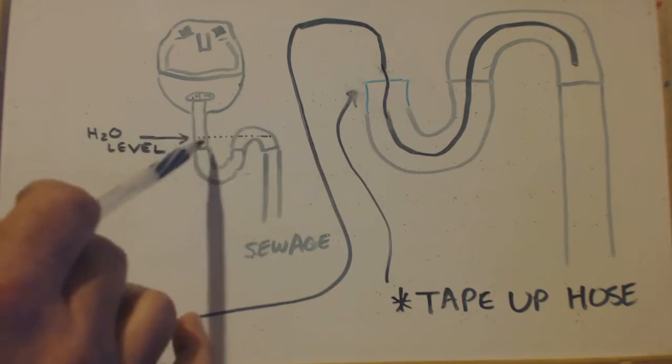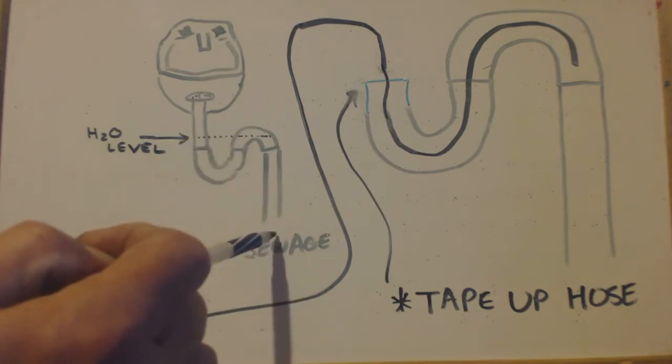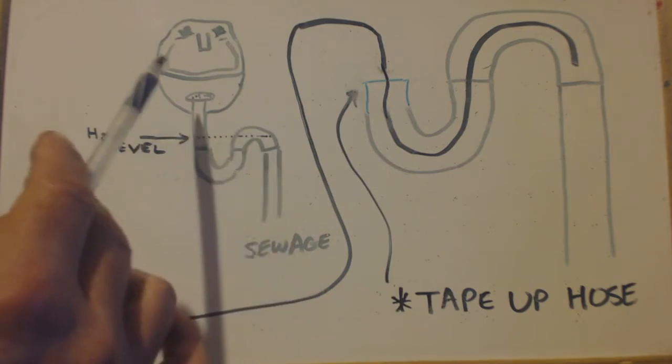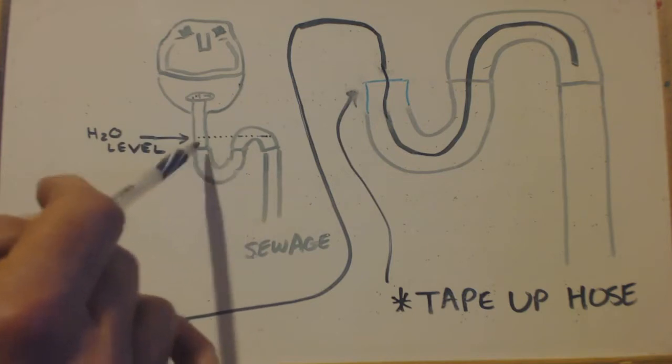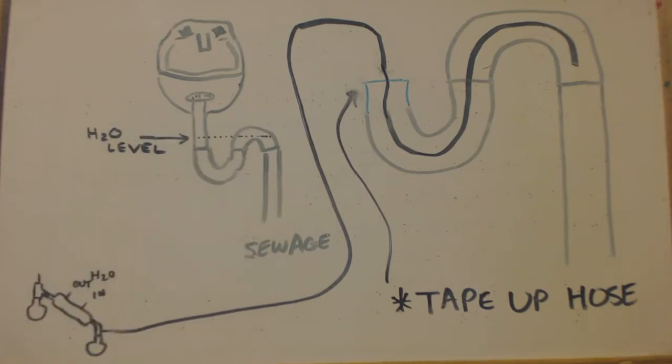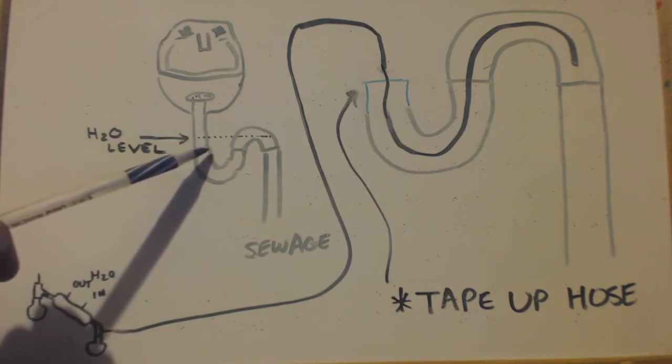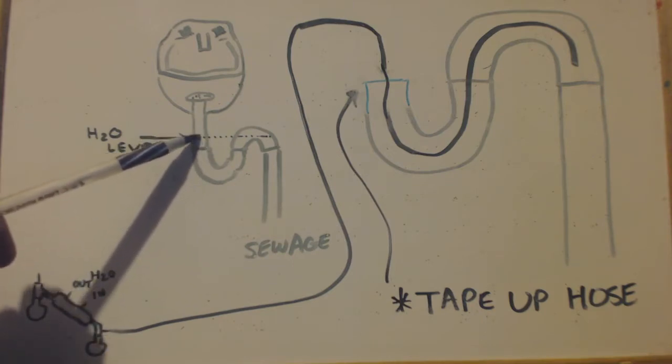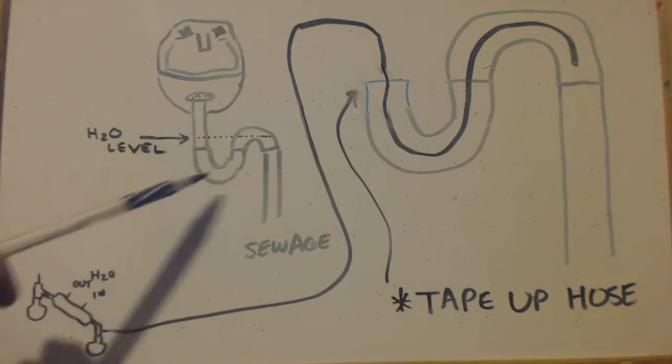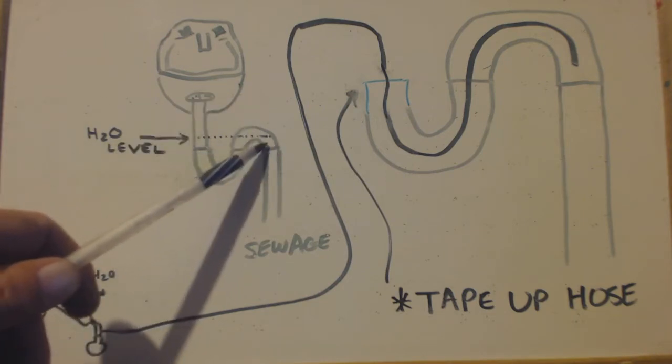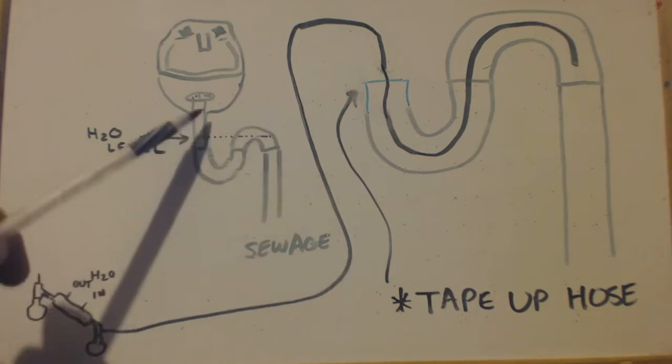That way you always have water in here. The sewage fumes don't come back up into the house. They get blocked by this water, by this U-trap. So what you do is you can take this off right here. Keep in mind the water level's up to here, so you're going to have to put a bucket under here, catch the water, then you can swivel this, swivel it out so that it's not directly under here.